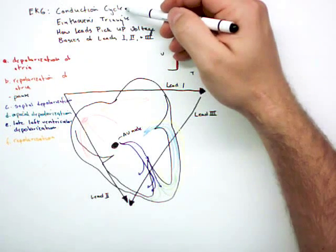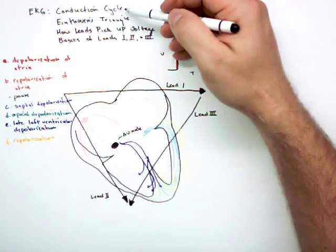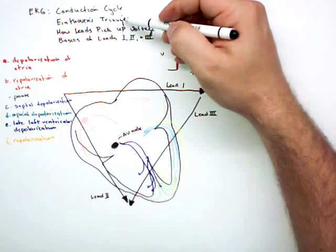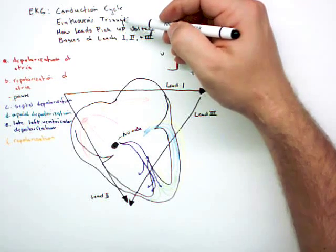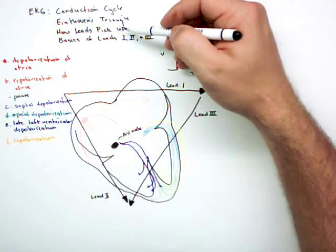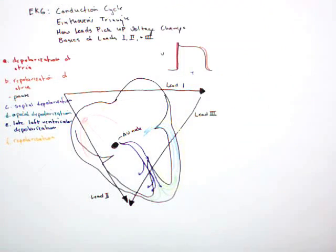Now we have this conduction cycle, which really just describes voltage changes. We've got Einthoven's triangle, which describes the leads that will pick up those voltage changes. The next thing is how do those leads pick up those voltage changes.